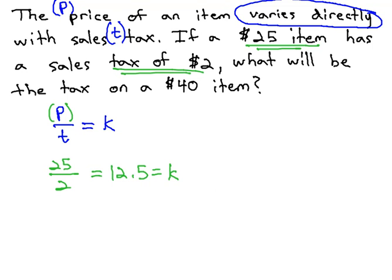Once we know the constant, we're ready to answer the question about the $40 item. To do this, we can go back to the equation we started with. Price over tax equals our constant.